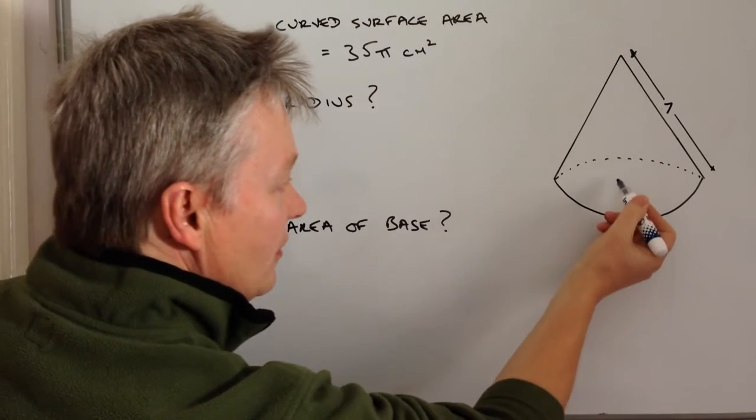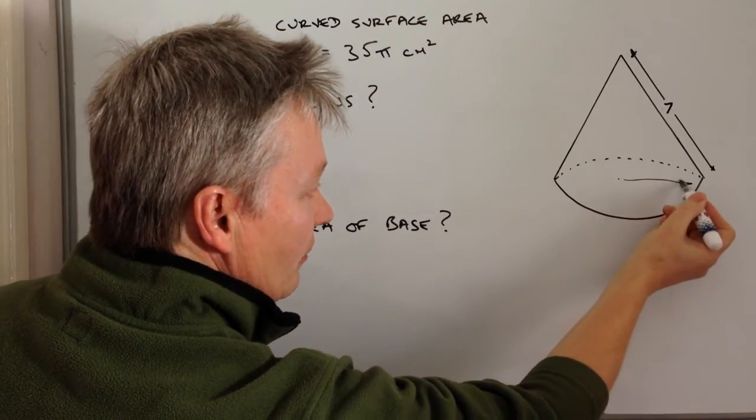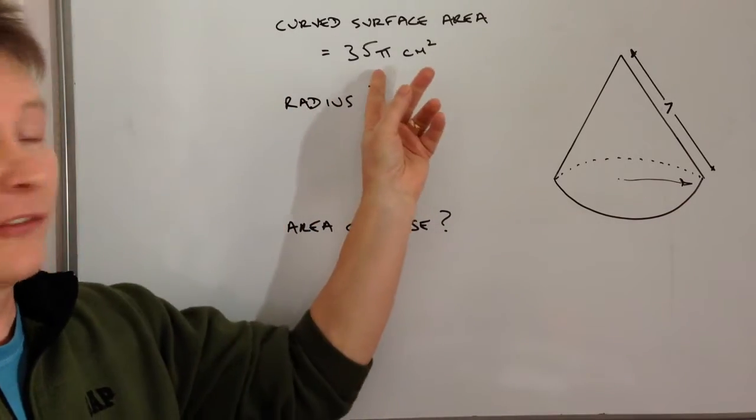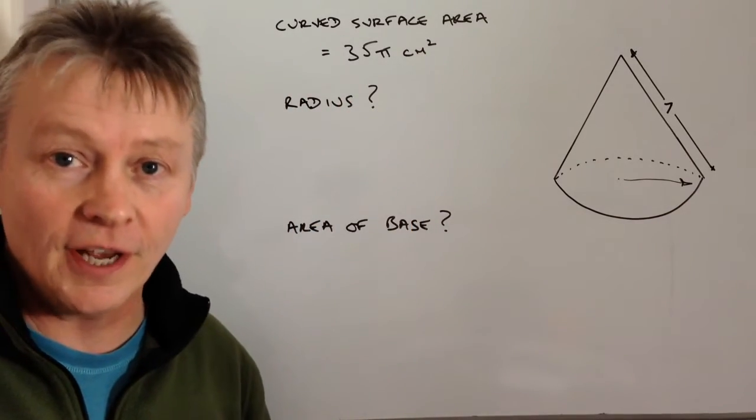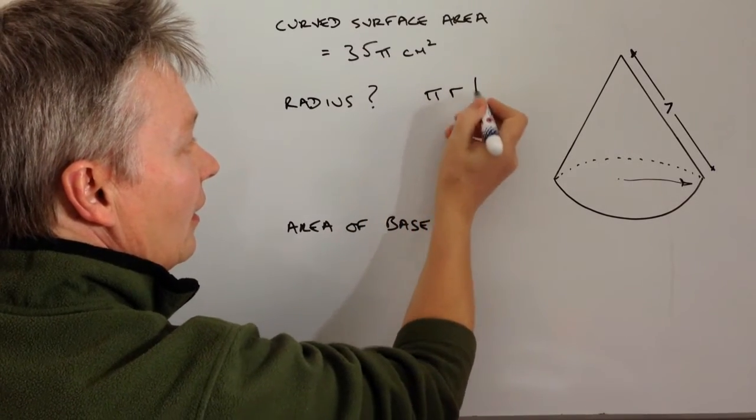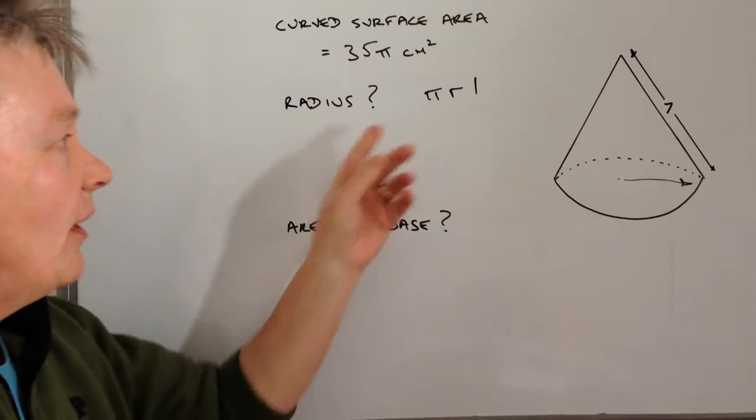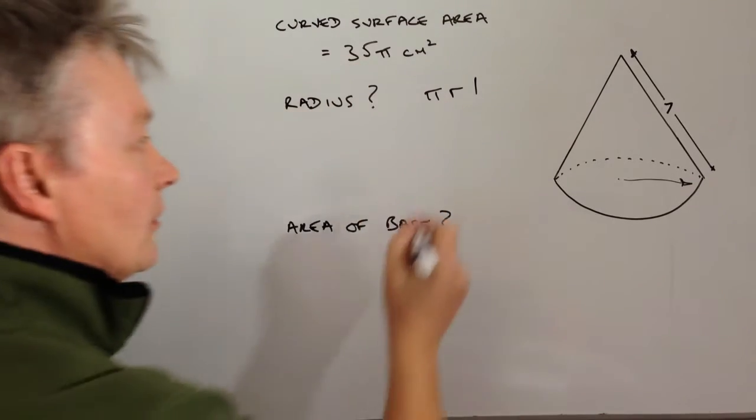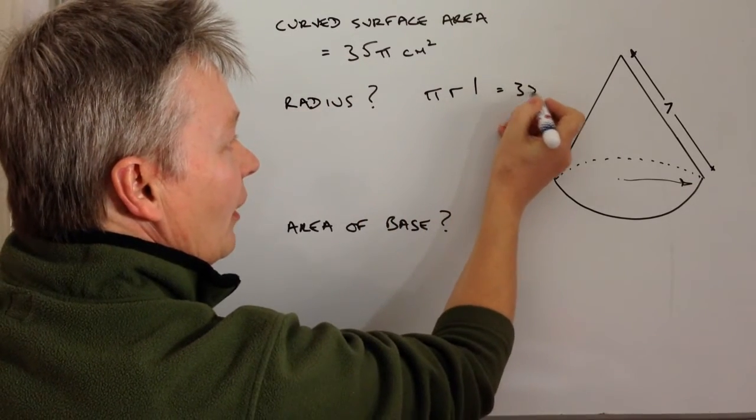So in order for you to find out the radius, which is this dimension at the bottom here, you need to know the formula for working out the curved surface area. The formula is actually πrl and what they're saying is that πrl equals 35π.